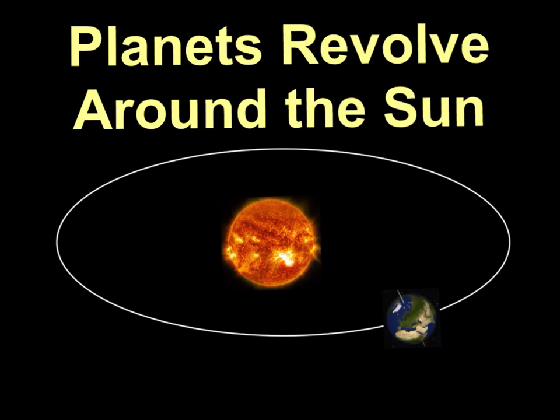Planets revolve around the Sun. A revolution is the movement of a planet along its orbit. An orbit is that elliptical, oval-like path — kind of like the trail or the path that the planets follow.